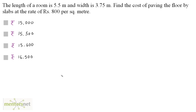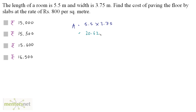A room is usually rectangular in shape and we have been given the length and its breadth. So we can calculate the area. Area is equal to 5.5 — that's the length — times 3.75 — that's the breadth — and if solved that will give you 20.625 square meters.